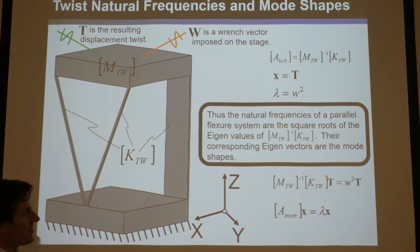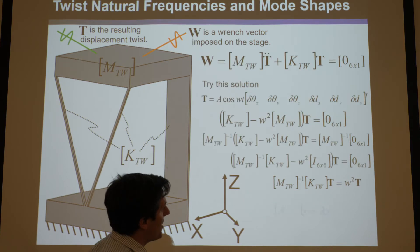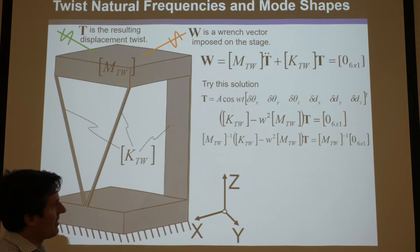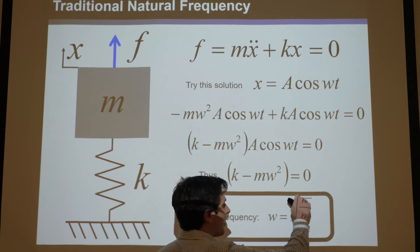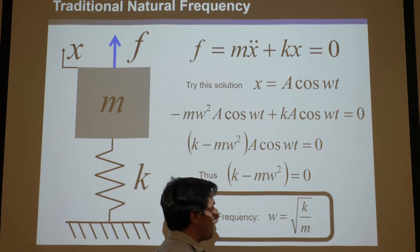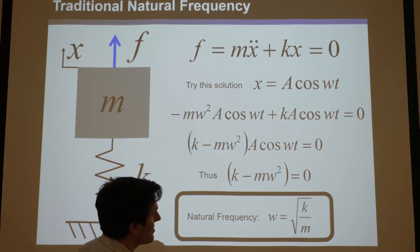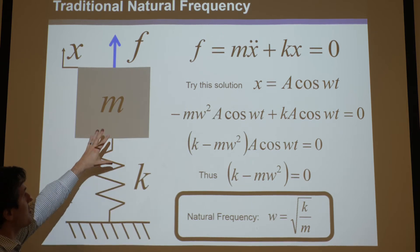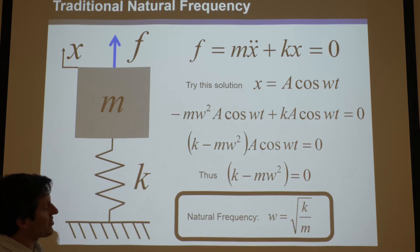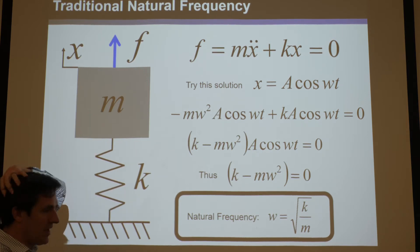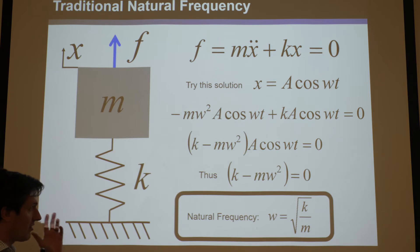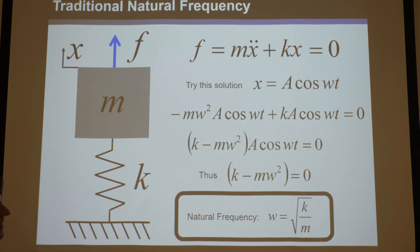A couple of insights. Remember, in one-dimensional land, the natural frequency was the square root of k divided by m, and there was only one mode shape — it could only vibrate in one direction. There's only one natural frequency. Of course, there's not a one-dimensional system in the entire universe, because we're in a three-dimensional universe.